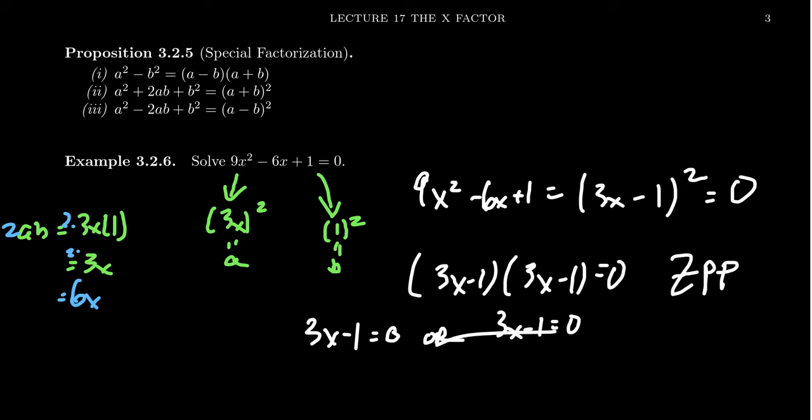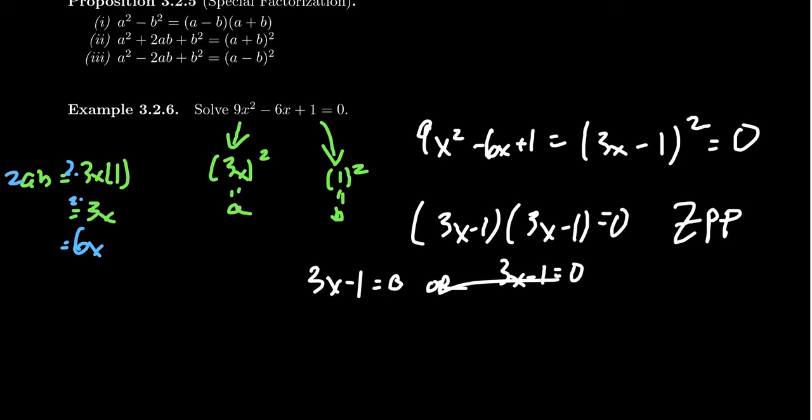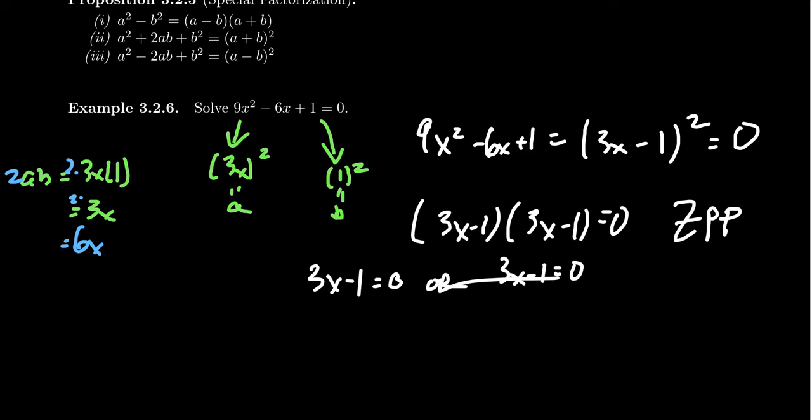You can see that the answer is redundant here, that both possibilities are actually one and the same thing. As we solve this, we're going to add 1 to both sides. We end up with 3x equals 1. We divide both sides by 3 and we get our solution is going to be x equals 1 third. In this example, this is what we refer to as a repeated solution or a repeated root because the factor in play here showed up twice. We only have to consider it once, but because it did show up twice, we call this a repeated root.